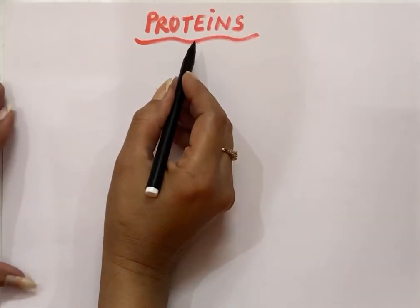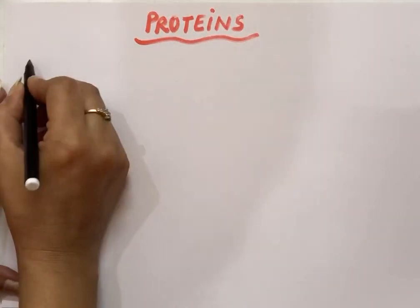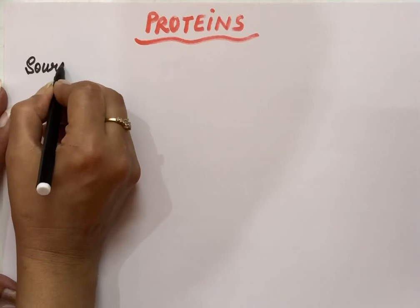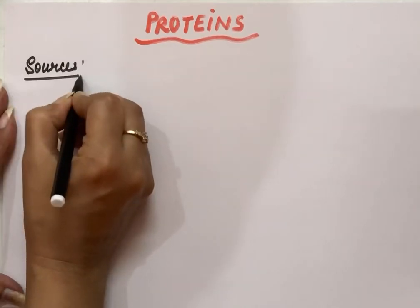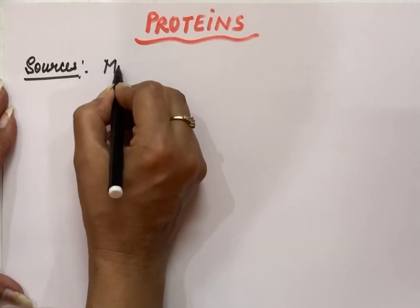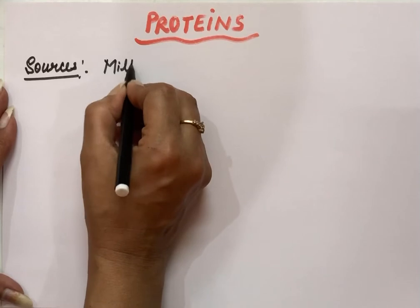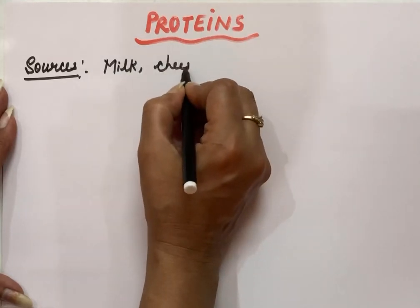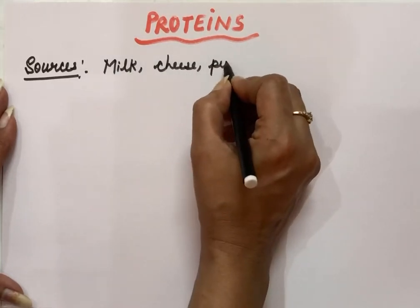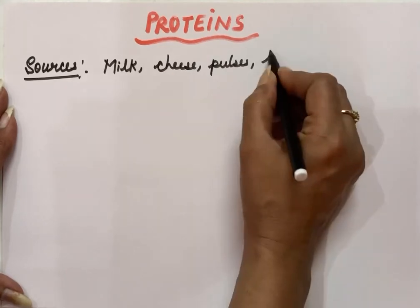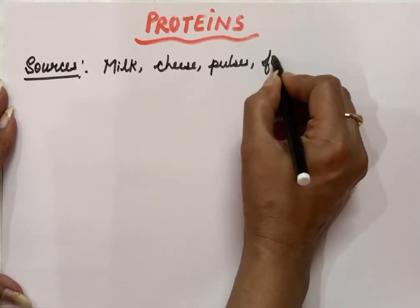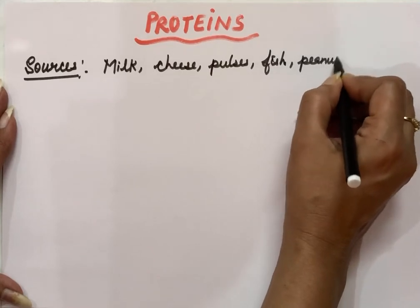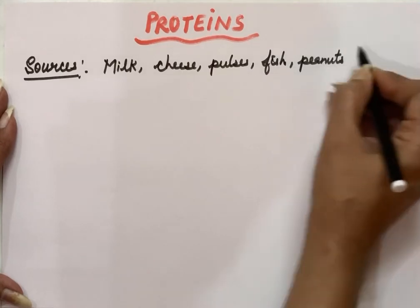Our next topic for today is proteins. First of all, sources of proteins — from where we get proteins. We get protein from milk, cheese, pulses, fish, and peanuts also have proteins, etc.